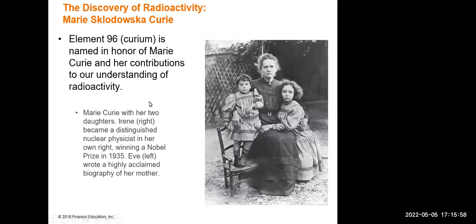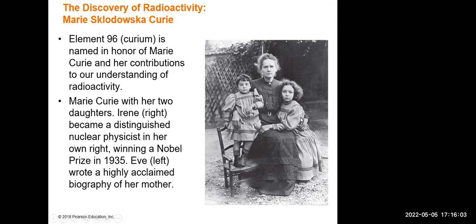This is a picture of Marie Curie and her two daughters. Element 96, curium, is named in honor of Marie Curie and her contributions to our understanding of radioactivity. Her daughter Irene, on the right, also became a distinguished nuclear physicist in her own right, winning a Nobel Prize in 1935.